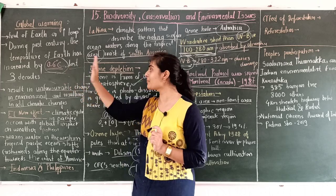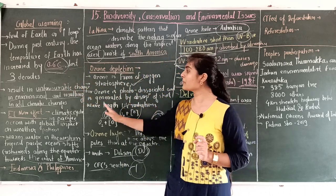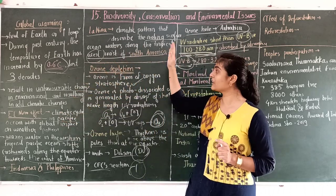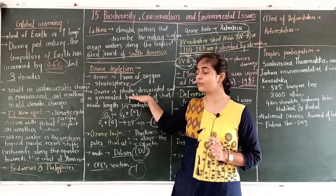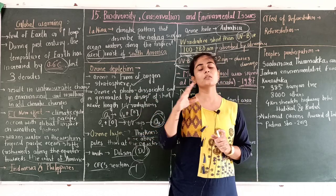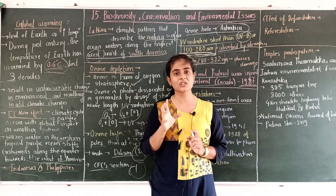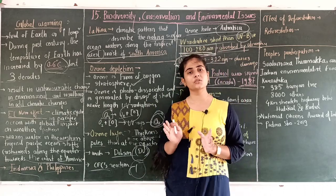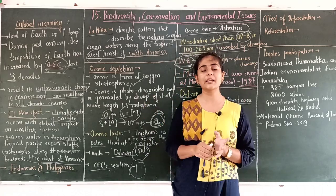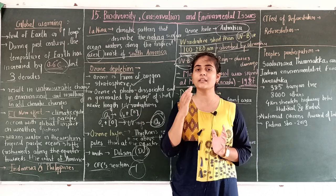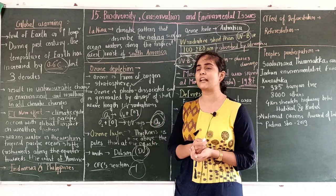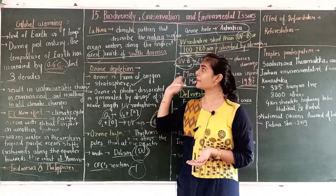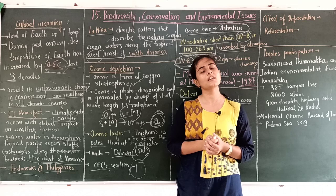So today we have completed: first is global warming, second is ozone depletion. In global warming we discussed two effects — El Niño effect and La Niña effect. In ozone depletion we discussed first the ozone molecule, then ozone layer, what is ozone depletion and its cause, and the Montreal Protocol. The remaining topic is deforestation, which we will complete in the next lecture. Thank you for today.